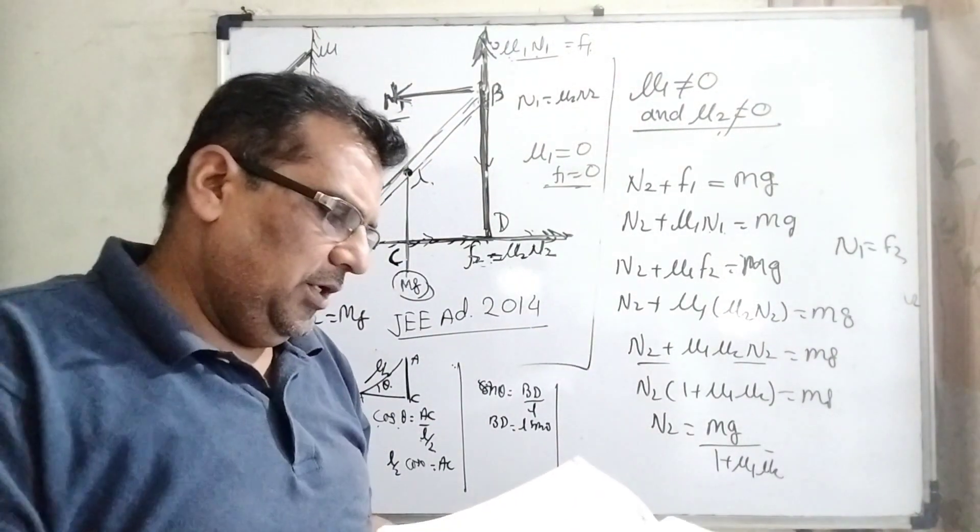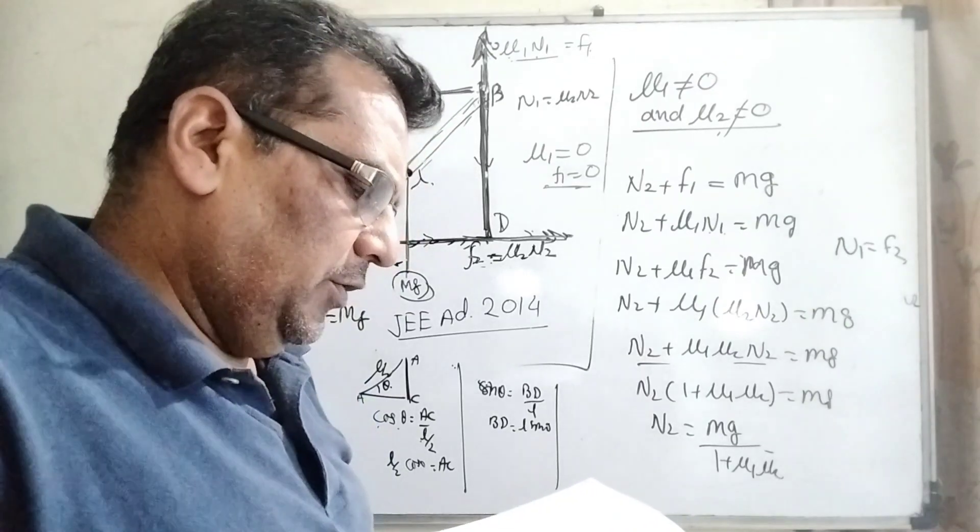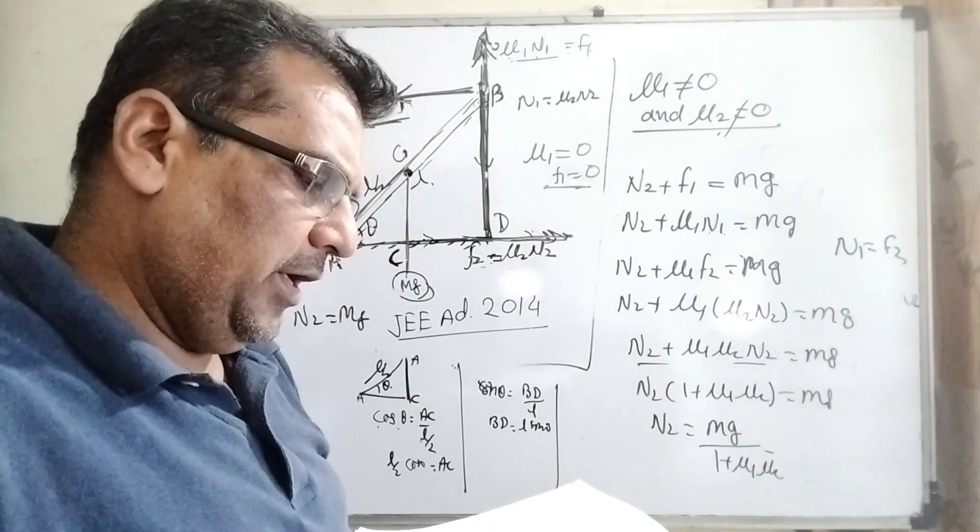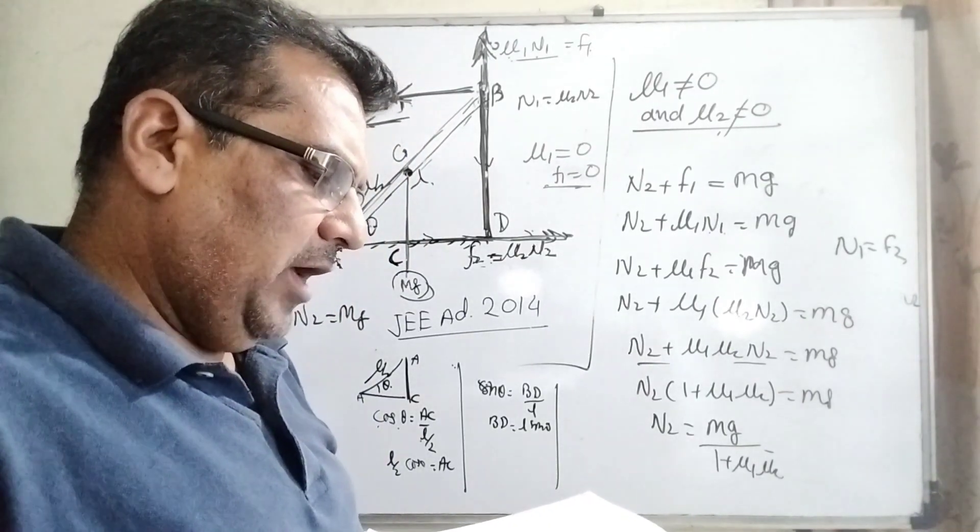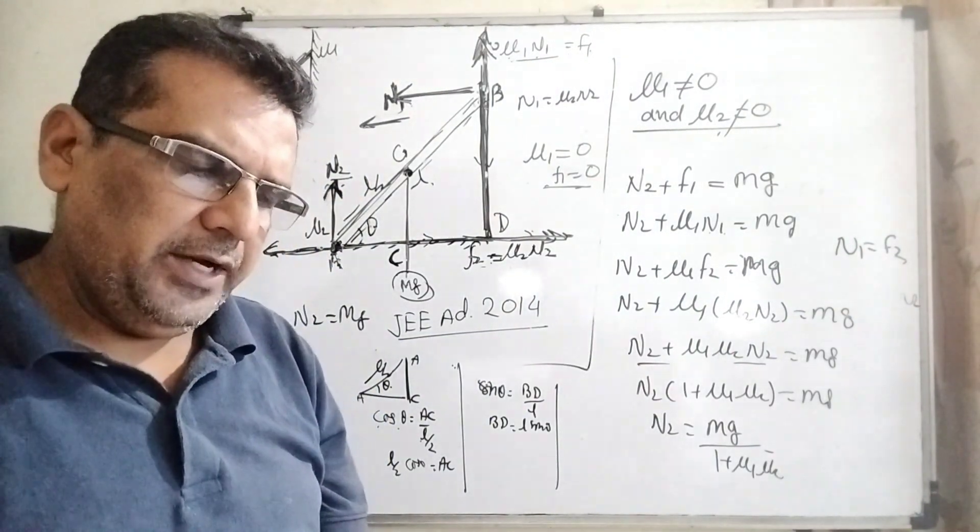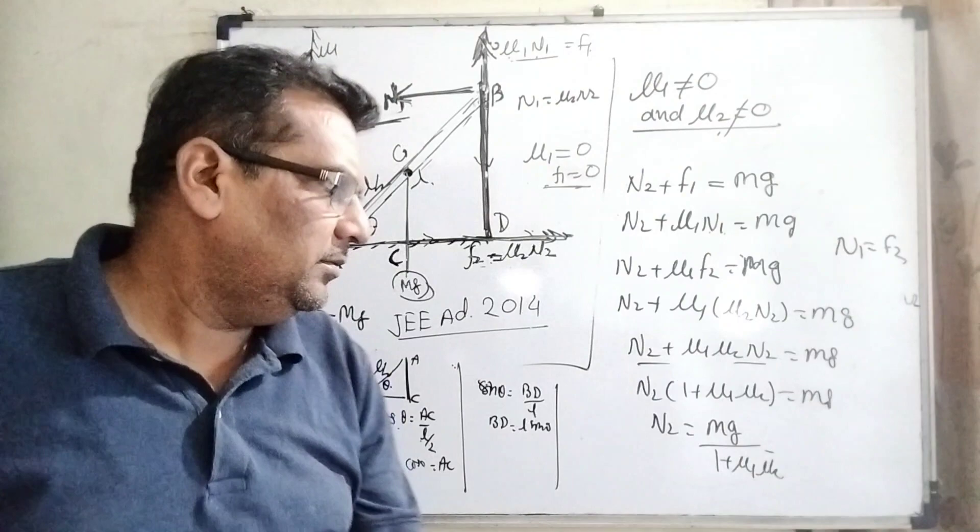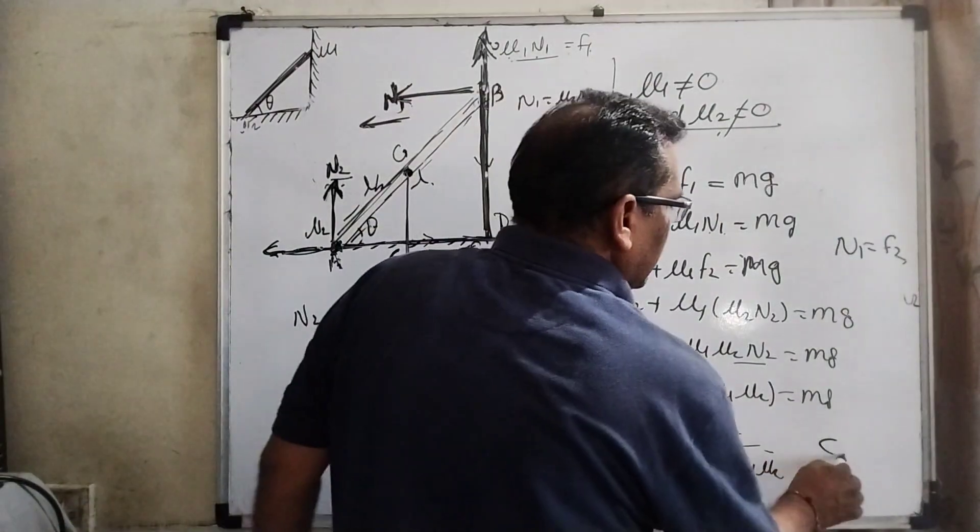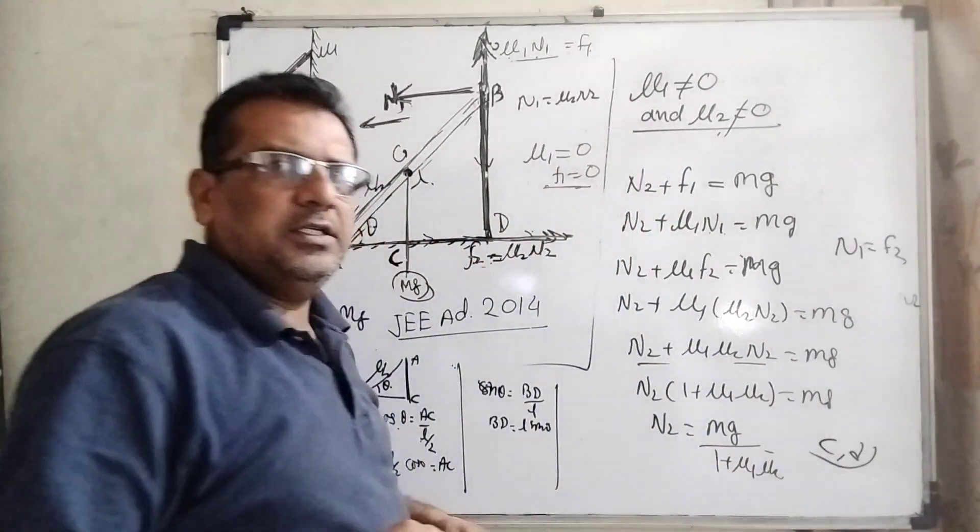Let's see which option is correct. Now here option C matches: mu1 not equal to 0, mu2 not equal to 0, and N2 equals mg by 1 plus mu1 mu2. Yes, so option C and option D are correct answers. I hope you understand this question.